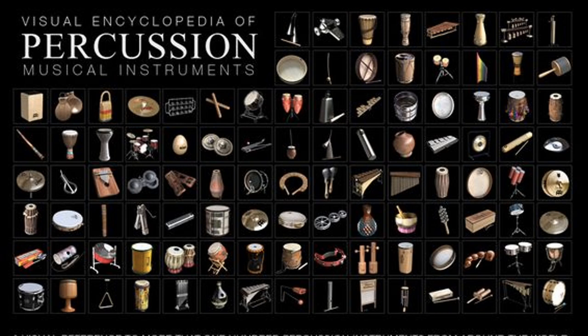Percussion instruments come in a huge variety of types and are used in all kinds of music all over the world. This diagram shows just a few — some are pitched, but a lot are unpitched. They're made from lots of different materials, but in all of them the sound is produced by hitting, shaking, or scraping.